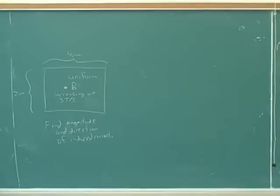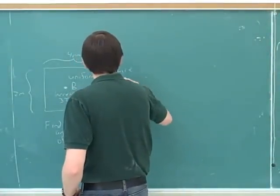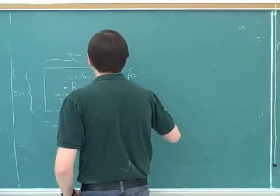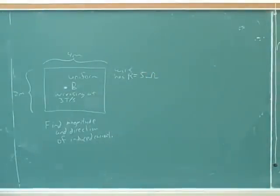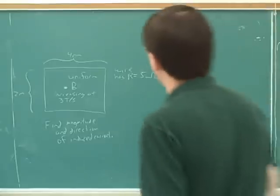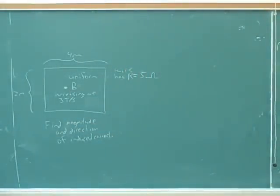I should give you some extra information. Let's say that the wire has a resistance of 5 ohms. This square here is supposed to be the wire. So we need to find the magnitude of B, I'm guessing, so that we can find the current.